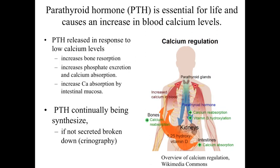PTH is released in response to low calcium levels. If calcium levels within the blood start to decrease, we're going to have release of parathyroid hormone to try to bring this back up. It can do this relatively rapidly by increasing phosphate excretion. By increasing phosphate excretion, that exchange mechanism within the kidneys will bring calcium in while excreting phosphate. Calcium that gets into the raw filtrate is going to be reclaimed within the uriniferous tubules of the kidneys in response to PTH. PTH also increases calcium absorption within the intestinal mucosa — bringing in more calcium from the diet relatively rapidly.